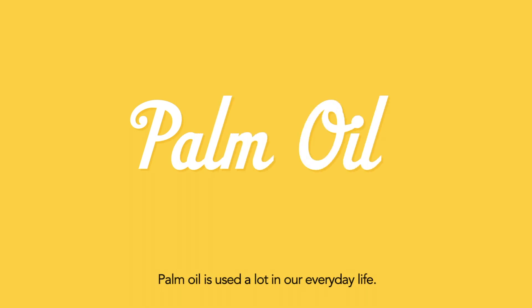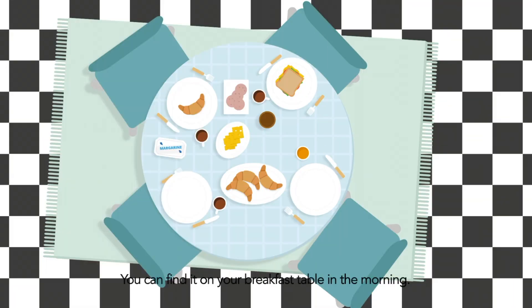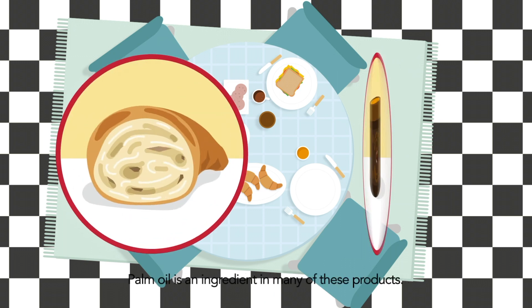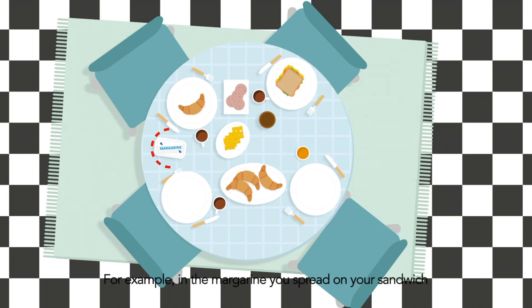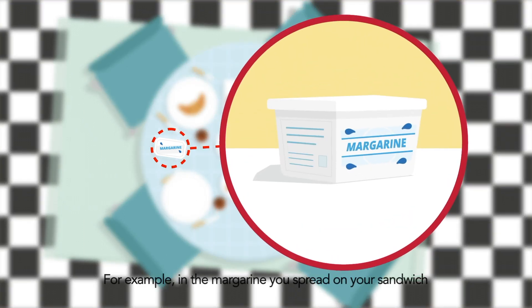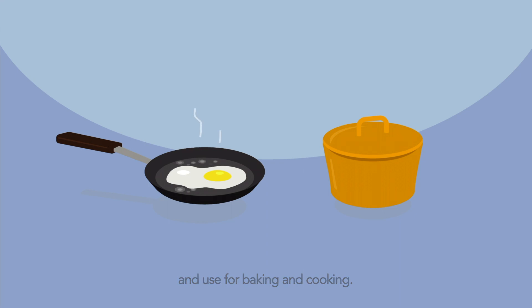Palm oil is used a lot in our everyday life. You can find it on your breakfast table in the morning. Palm oil is an ingredient in many of these products. For example, in the margarine you spread on your sandwich and use for baking and cooking.